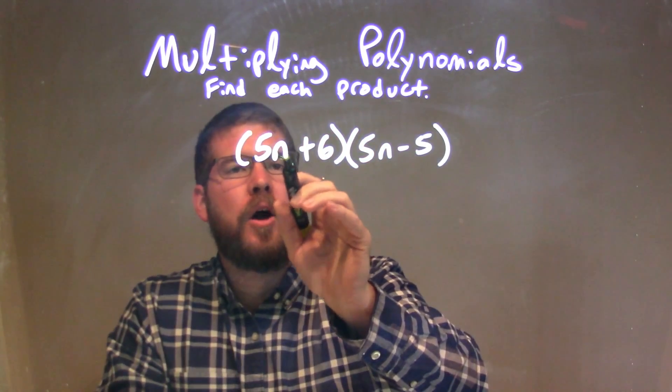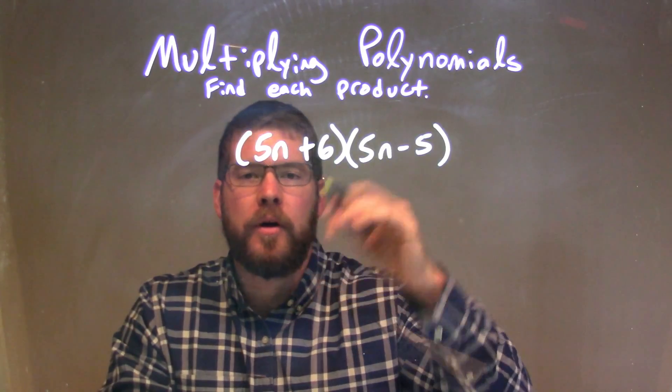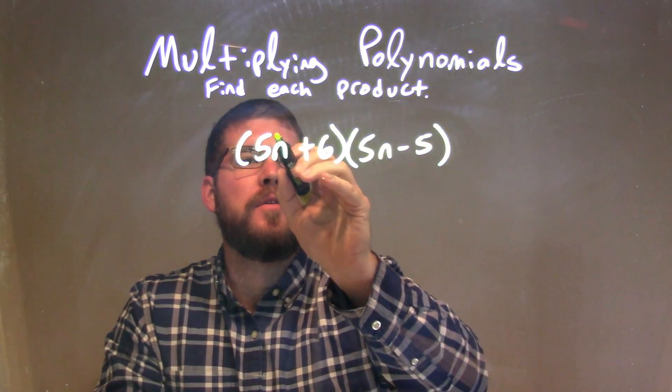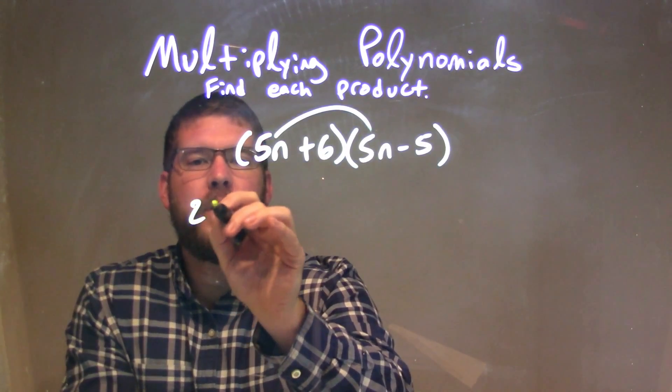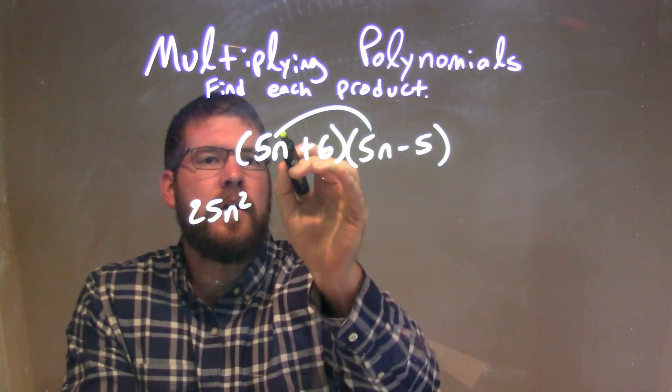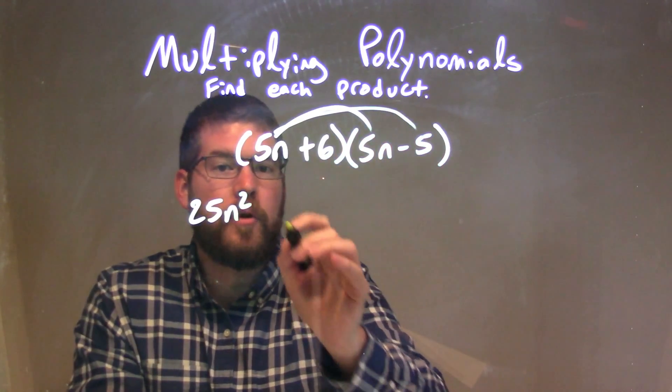So now I'm going to multiply all parts of my first parenthesis by all parts of my second parenthesis. So 5n times 5n, and let's draw the arcs to show which ones we're multiplying, is 25n squared. 5n times minus 5 is minus 25n.